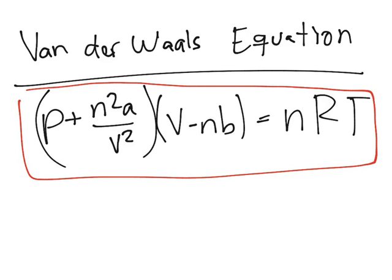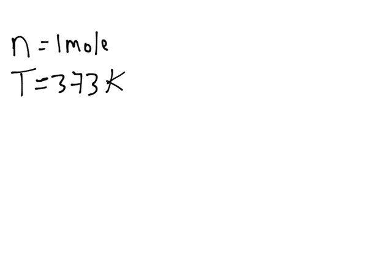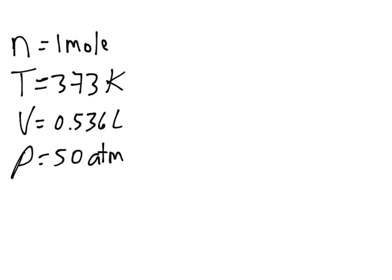So now let's solve a problem in which we have a non-ideal gas. The problem says carbon dioxide gas, one mole. We have one mole of carbon dioxide, so we're given n equals 1 mole. And it's at 373 Kelvin. It has a volume of 0.536 liters. And a pressure of 50 atmospheres. So you can see that the pressure is already high, and that's telling you this is a non-ideal gas.